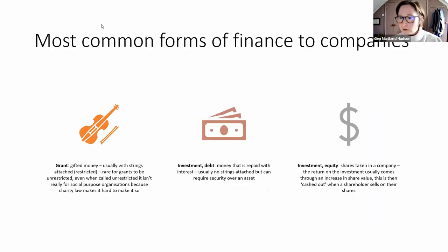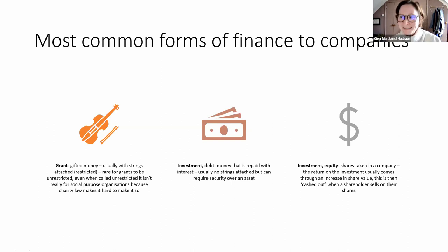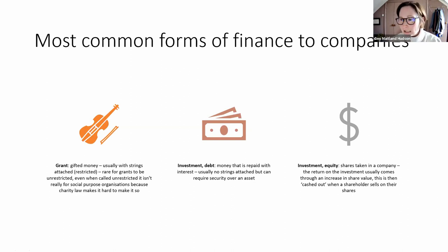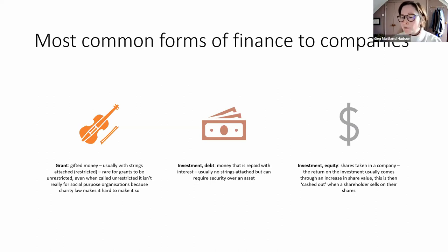There are different kinds of finance you can access if you're a social purpose organisation. Grant is presumably familiar — it's gifted money, usually restricted and project-based, and it's quite hard to get unrestricted grants even when funders claim they'll pay core costs. Then there's investment in the form of debt: loan finance with interest payments and sometimes a requirement for security. The third kind is equity — taking shares in a company — where the investor's exit usually comes through an increase in share value.